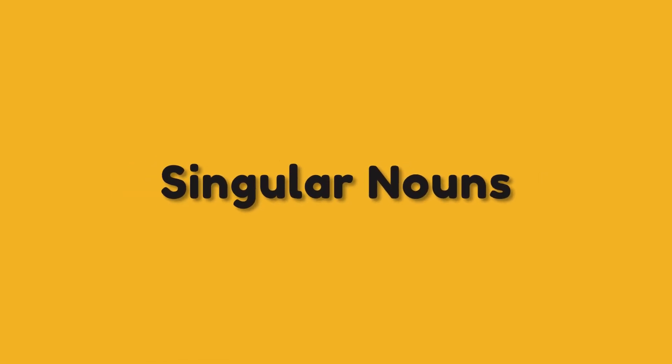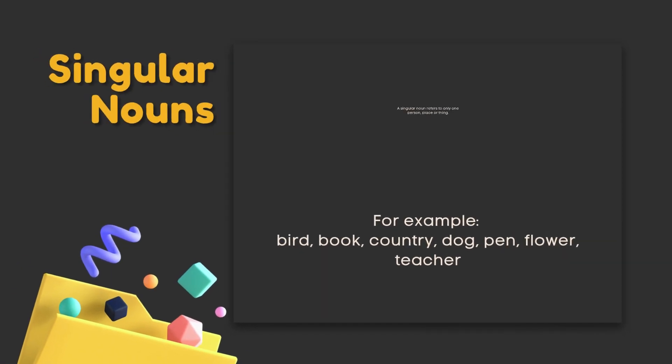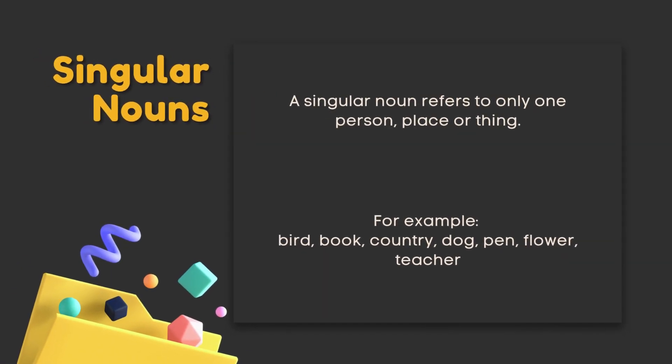Singular nouns. A singular noun refers to only one person, place, or thing. For example: bird, book, country, dog, pen, flower, teacher.